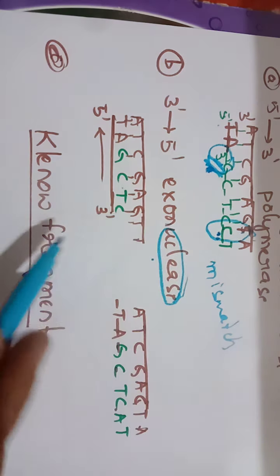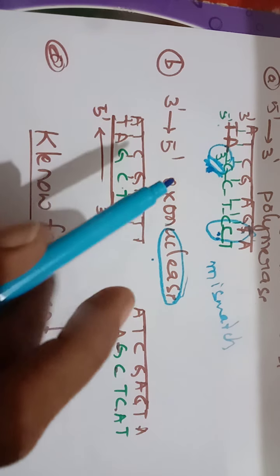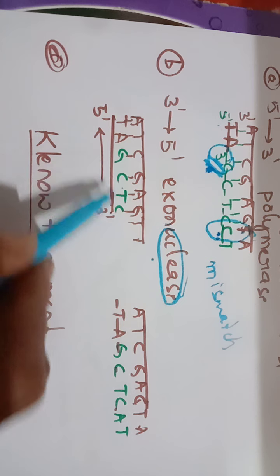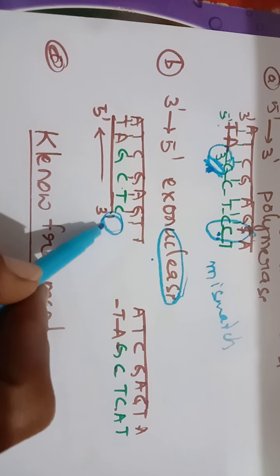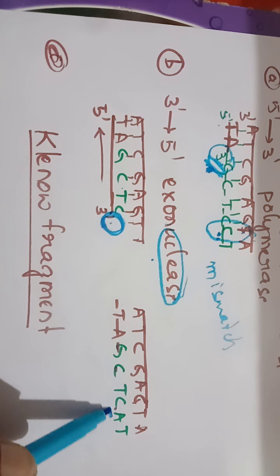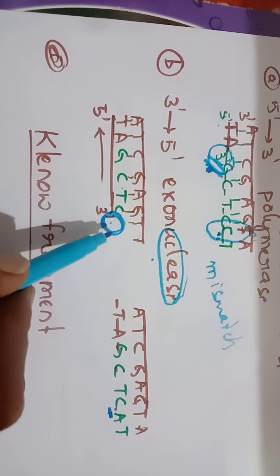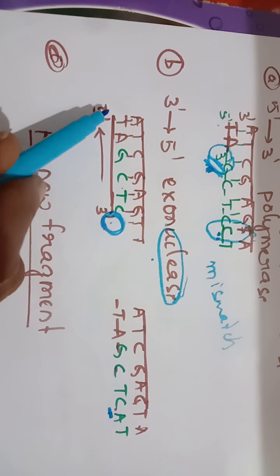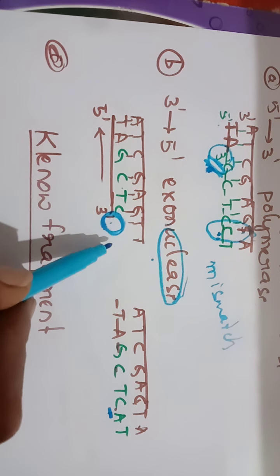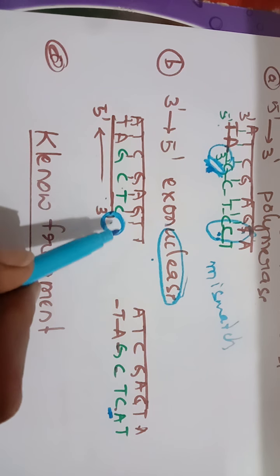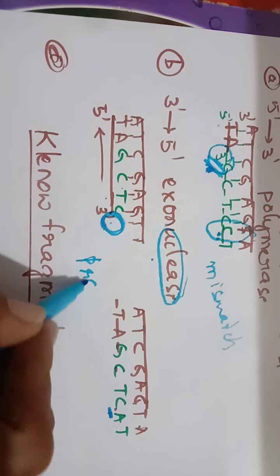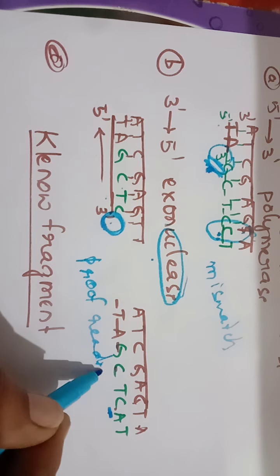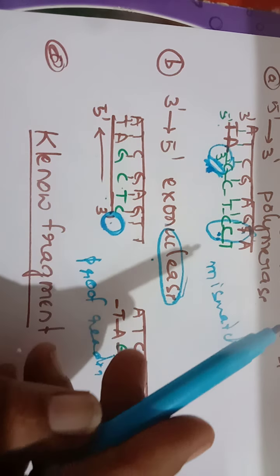When there is a mismatch — for example T is on the template but C was incorrectly added — the 3 prime to 5 prime exonuclease activity allows the polymerase to go in the reverse direction, remove the incorrect C, and add the correct A. Because it travels in reverse while removing, this activity is known as proofreading activity.